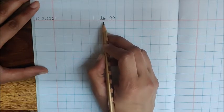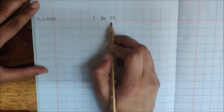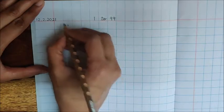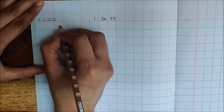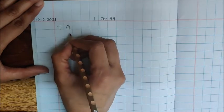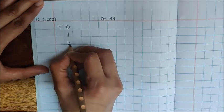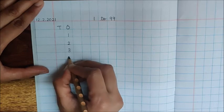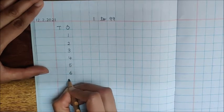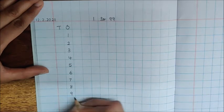You have to practice writing numbers 1 to 99. You have its test on February 17, which is Wednesday. You have to write T.O. first, T.O.